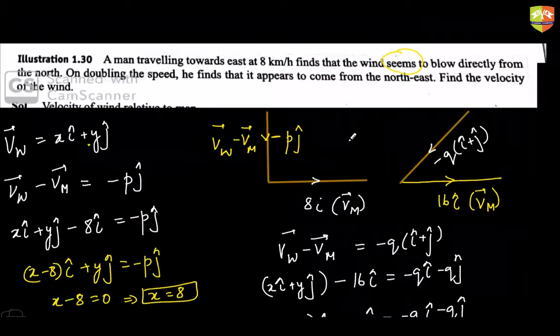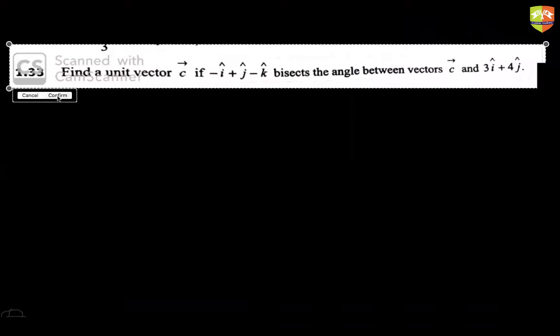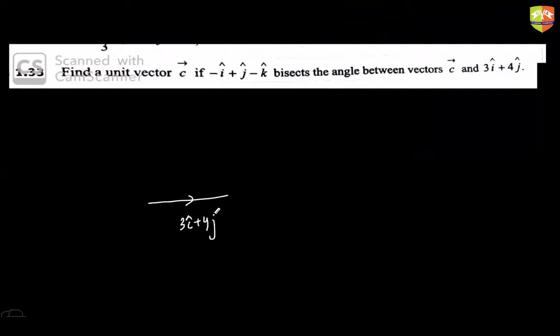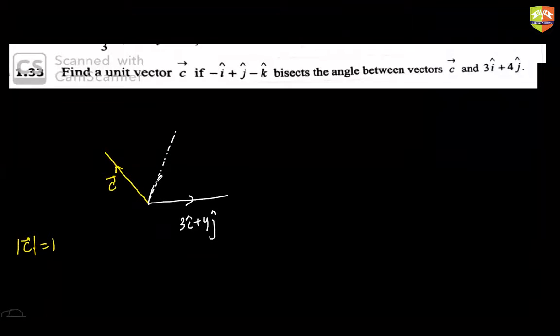Next question: vectors and 3D are very important for competitive exams — expect 3 to 4 combined questions. The problem: find a unit vector c such that a given vector (-i + j - k) bisects the angle between c and the vector 3i + 4j.